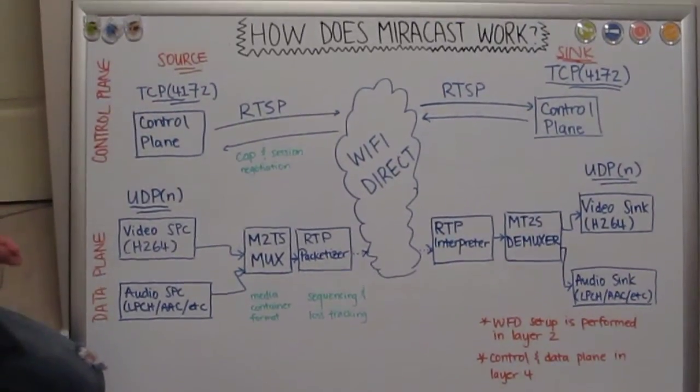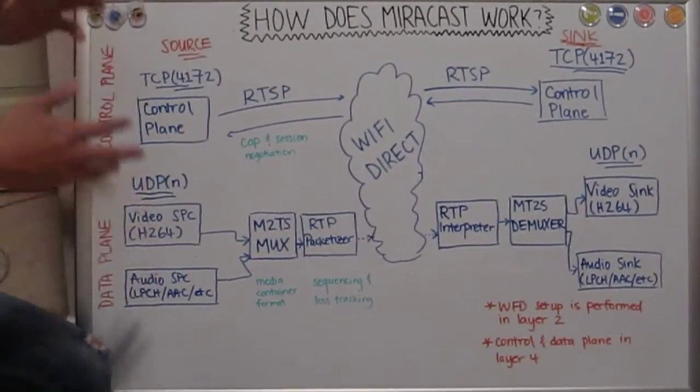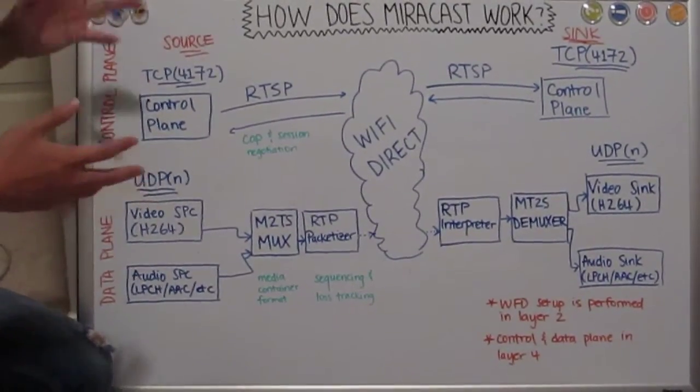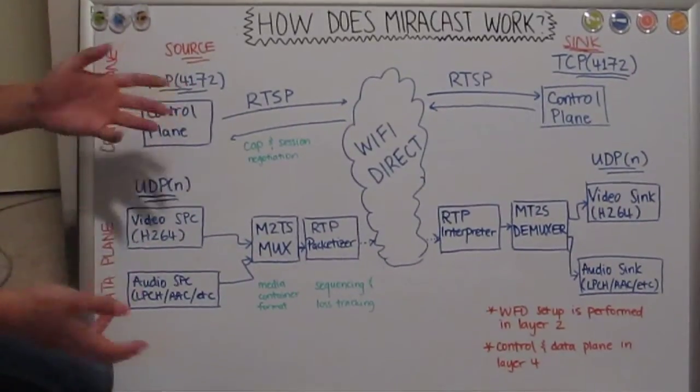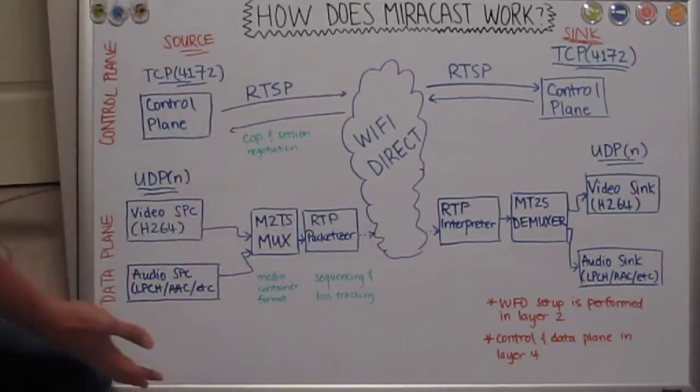So that's why the Raspberry Pi is actually a very good platform to implement Miracast on. So that's generally how the overall picture of how it works.